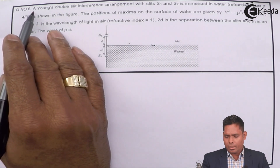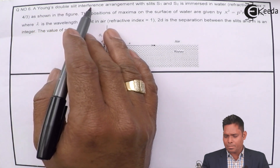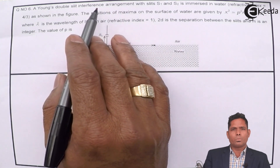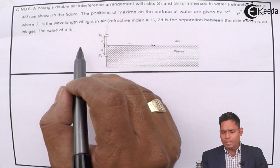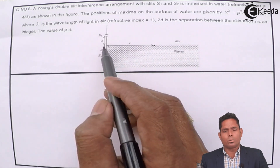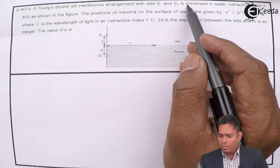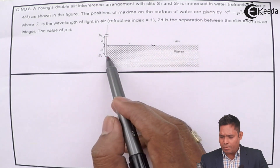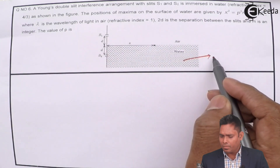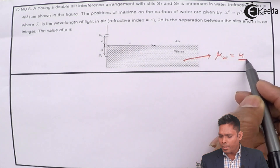Question number 6 is a Young's double slit experiment interference arrangement. It is a YDS experiment with slits S1 and S2 as shown in the figure. The apparatus is immersed in water with refractive index mu_water = 4/3.